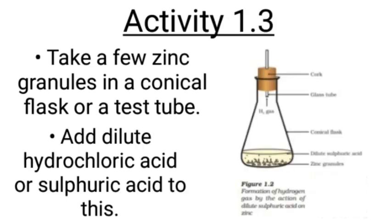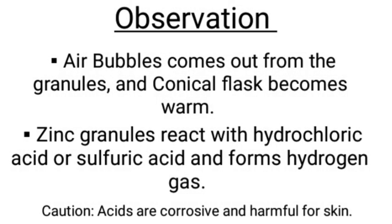Activity 1.3. Take zinc granules in a conical flask or a test tube. Add dilute hydrochloric acid or sulfuric acid to this. Observation: air bubbles come out from the granules and the conical flask becomes warm. Zinc granules react with hydrochloric acid or sulfuric acid and form hydrogen gas.